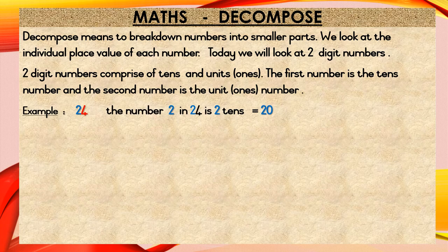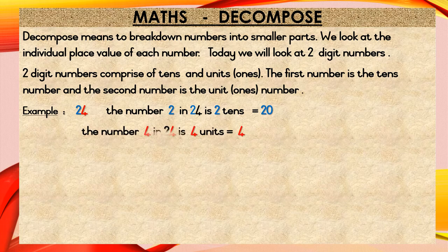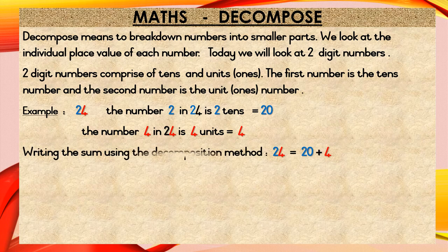24. The number 2 in 24 is 2 tens, which is equal to 20. The number 4 in 24 is 4 units, which is equal to 4. Writing the sum using the decomposition method: 24 is equal to 20 plus 4.